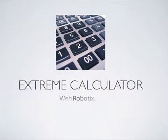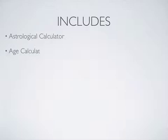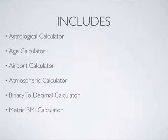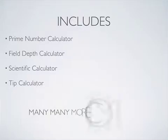Extreme Calculator by Web Robotics. It is an all-in-one calculator app that includes Astrological Calculator, Age Calculator, Airport Calculator, Atmospheric Calculator, Binary to Decimal Calculator, Metric BMI Calculator, English BMI Calculator, Prime Number Calculator, Field Depth Calculator, Scientific Calculator, Tip Calculator, and many more coming soon.